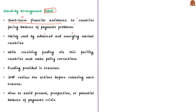When a country receives funds via SBA, that country must take measures to address the problems that led it to seek funding in the first place. Moreover, SBA is provided in tranches, and before each tranche is provided, the IMF reviews the country's policies. Recently, the IMF bailout package for Pakistan was also provided under the SBA facility.